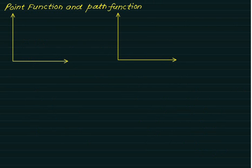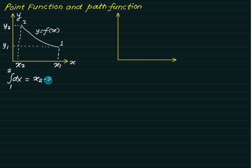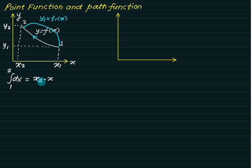Before starting the concept of work, let's have a mathematical introduction to point functions and path functions — that is, exact differentials and inexact differentials. For this we consider the concept of area under a curve. Consider a system where the horizontal axis is x and the vertical axis is y, with a certain function or curve. Let x1 and x2 be two points on the x-axis, and y1 and y2 on the y-axis. If we integrate dx from 1 to 2, we get x2 minus x1.